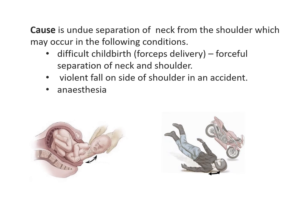What is the cause of Erb's palsy? The cause is undue separation of the neck from the shoulder, which stretches or puts pressure on the upper trunk. This may occur in the following conditions: first, in a difficult childbirth such as forceps delivery; second, when a person meets with an accident and violently falls on the side of the shoulder — the shoulder comes to rest while the head and neck are still in motion, causing undue separation; third, a direct injury such as when anesthesia is administered for blockage of the brachial plexus.